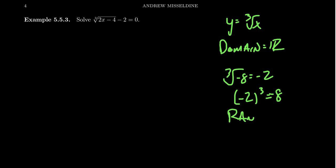The range is also going to be all real numbers, and every number can come out of a cube root. So if you end up with something like the cube root of x equals negative two, you don't have to disqualify it — that's completely valid. Take the cube of both sides and you end up with x equals negative eight. The domain and range have no restrictions, which makes solving this a lot easier.